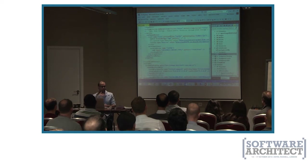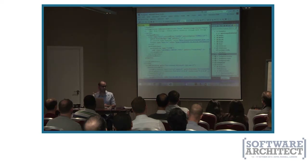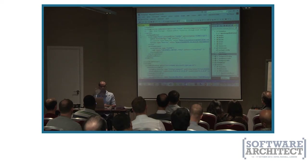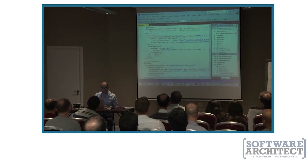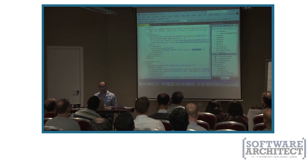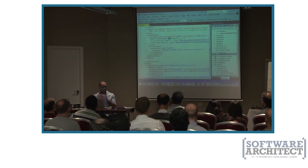URL rewrites in IIS work not only for incoming requests, but also for outgoing responses — meaning they can check the HTML file, search for specific tags such as image elements, and change the source URL. Not only for images, but also for anchors, CSS, and JavaScript — anything that has to do with loading another resource. This uses a precondition of isHTML, meaning the content type starts with text/HTML, and I'm searching for tags named IMG.